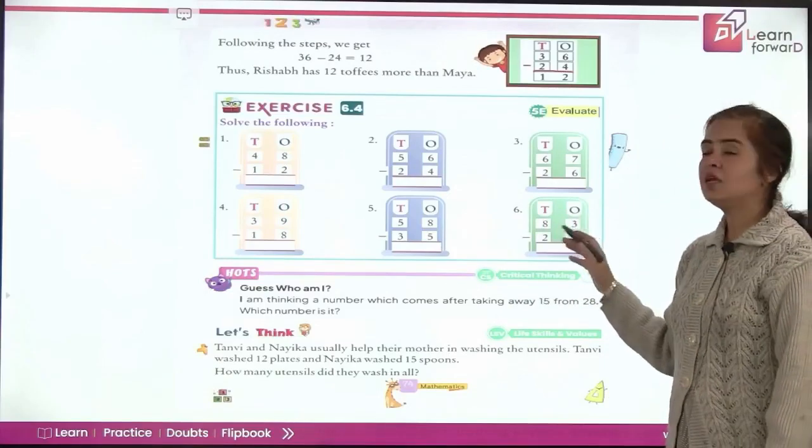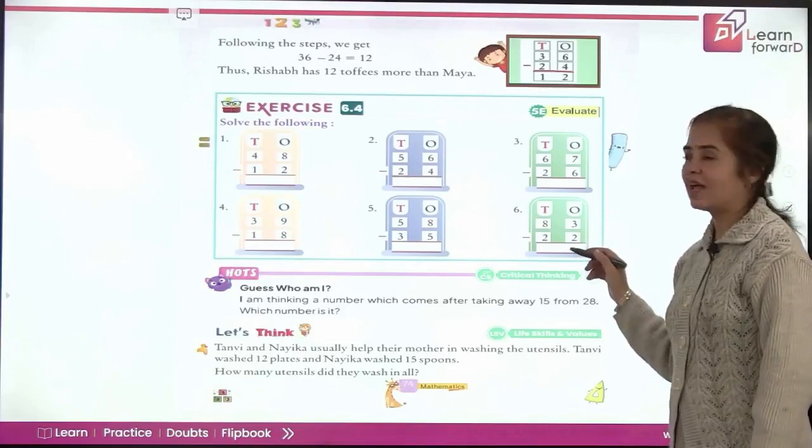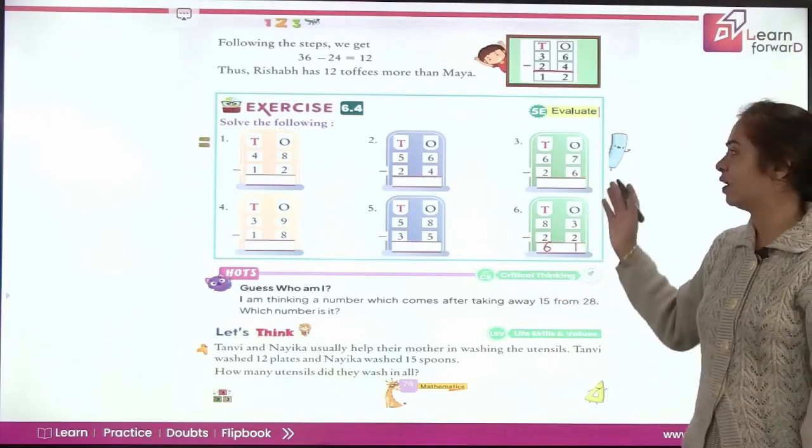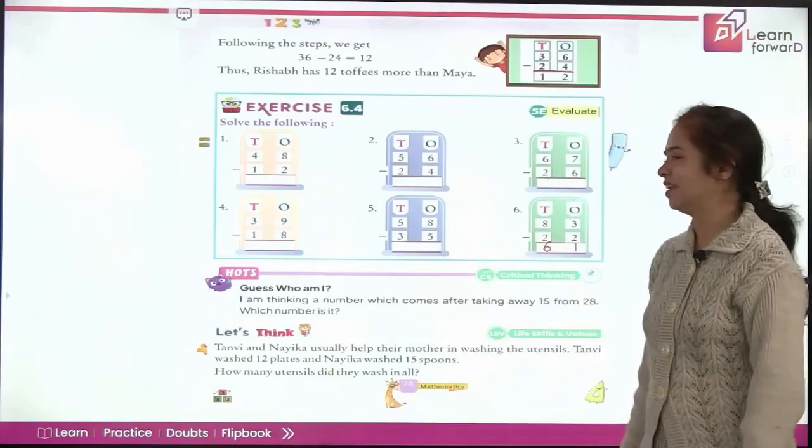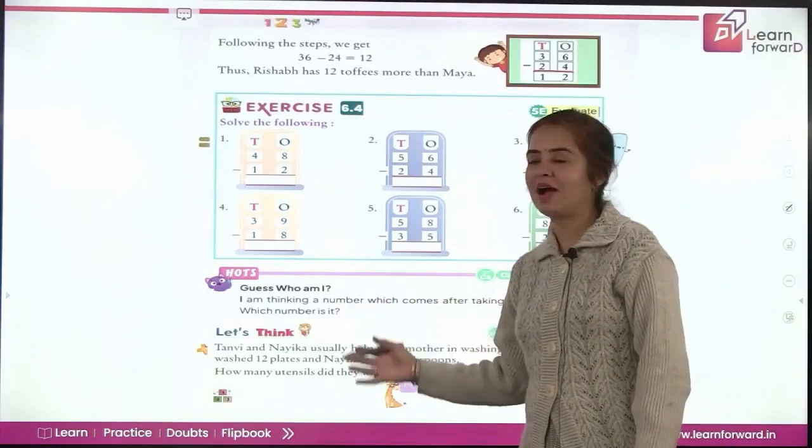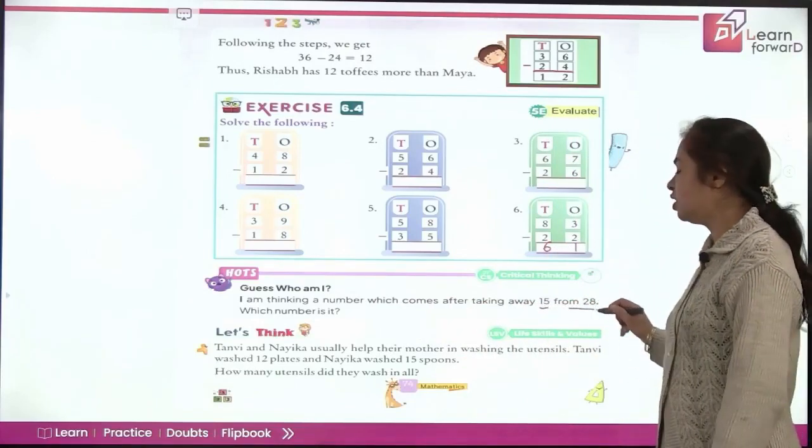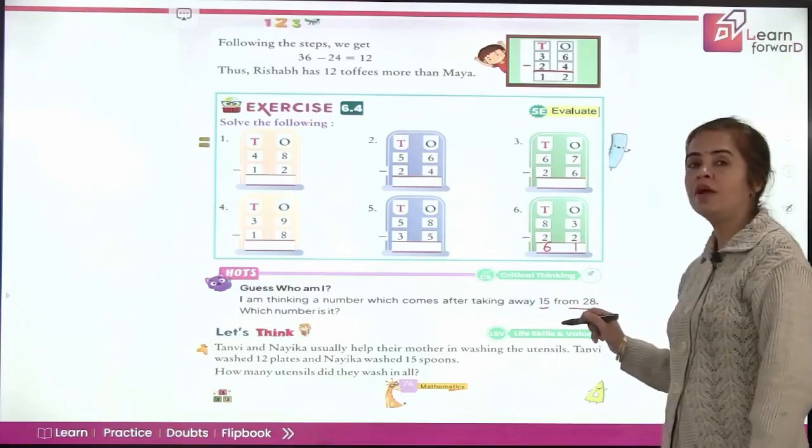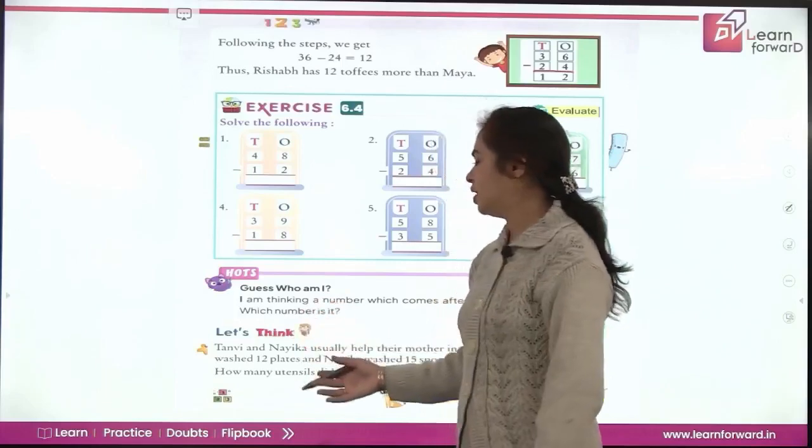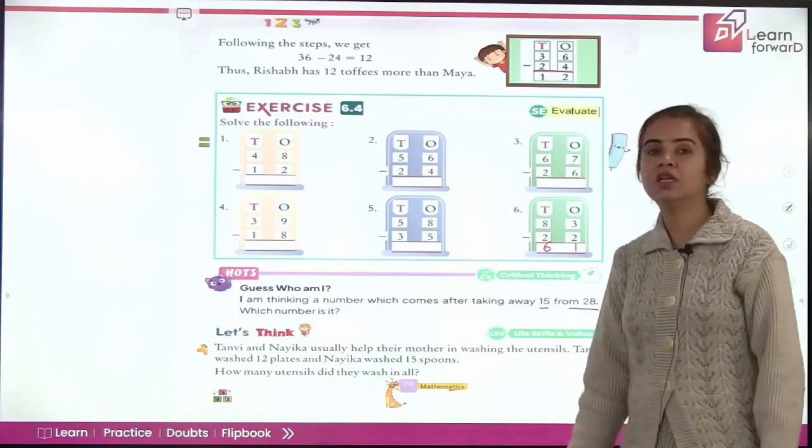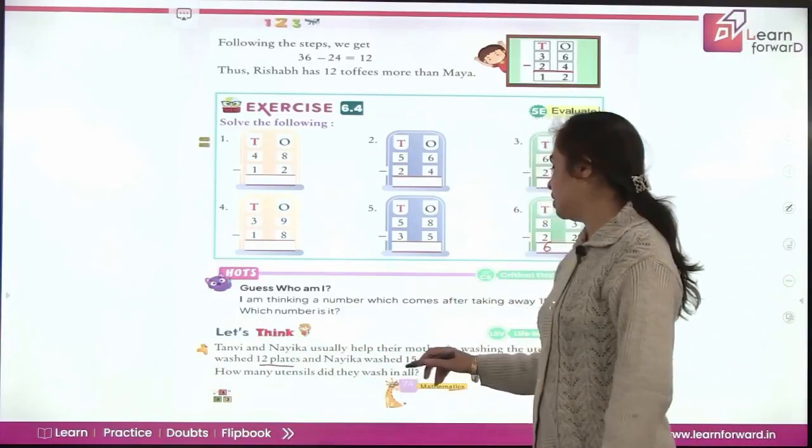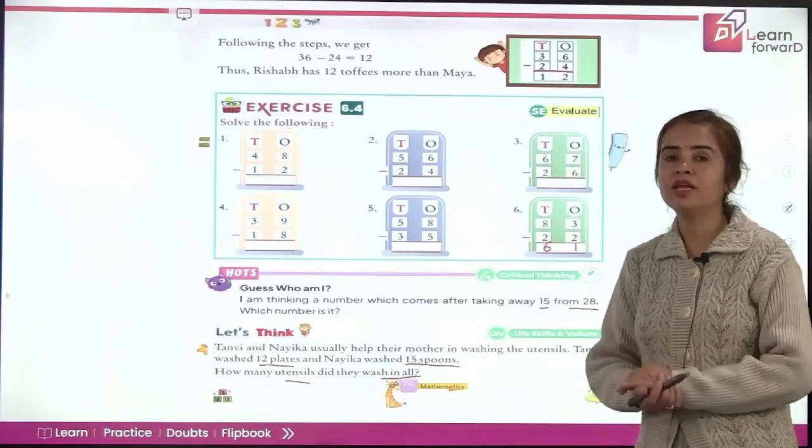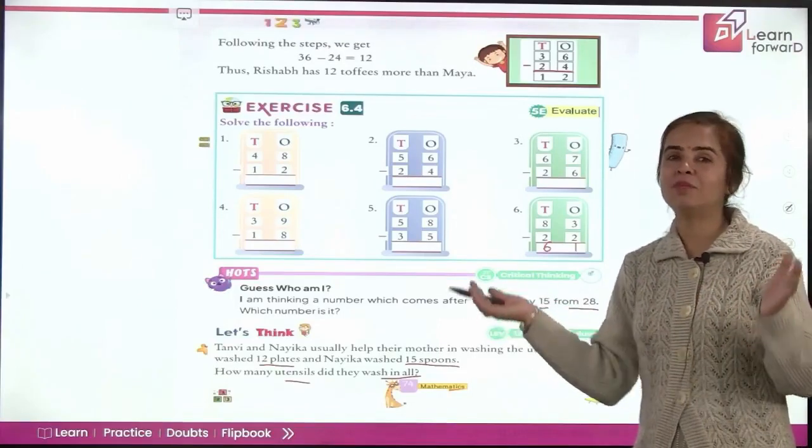Put minus sign and start subtracting from the ones place. So we draw a line to show that this is the answer below line. 6 minus 4 is 2 and 3 minus 2 is 1. So the answer is 12. That's it. Again an exercise for you. So let's do one question here. 83 minus 22 all well arranged for you. So easier task. Let's start from 1. 3 minus 2 is 1 and 8 minus 2 is 6. So the difference here is 61 and the rest of the parts. Yes, you will be doing yourselves children. Now we have hots for you. Guess who am I? I am taking a number which comes after taking away 15 from 28. So when you take away what do you have to do? You have to subtract. So subtract 15 from 28 and find out the number yourselves.